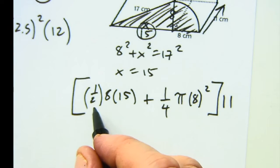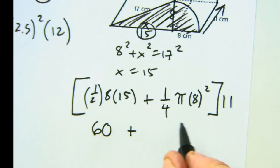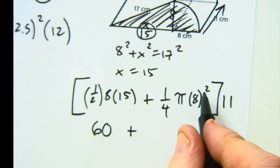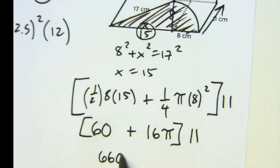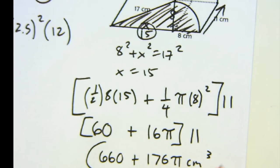So this is 60. This is 64 divided by 4, this is 16. Then I'm going to multiply all that by 11. So 60 times 11 is 660, and 16 times 11 is 176 pi centimeters cubed. Cool stuff.